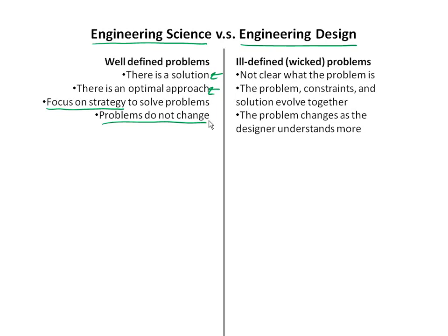In engineering design, we generally work on what are called ill-defined, or sometimes wicked, problems — not because they're evil or bad, but because they're very wicked to solve. In these types of problems, it's not always clear, or may not even usually be clear, what the problem is. You're making some assumptions about what the problem is, but other people may come to different assumptions. The problem itself, the way you define it, the constraints and limitations, and the solution all evolve together. As you work toward a solution, the problem itself may take on a different aspect, and you may find you're not solving the right problem.